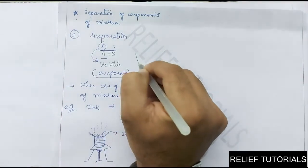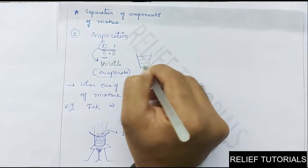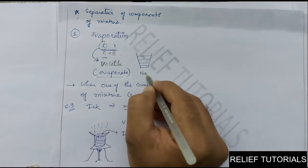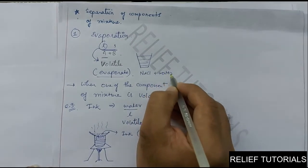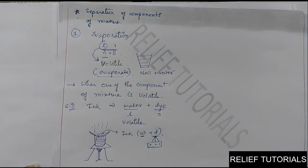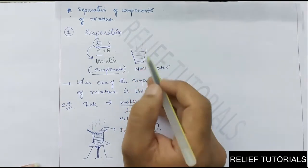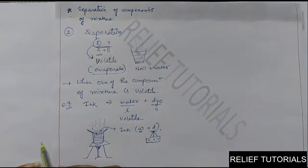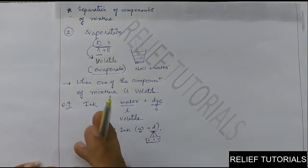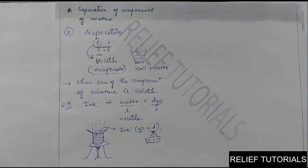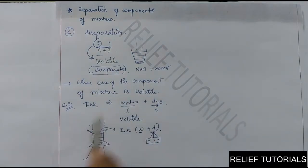Another famous example: consider a glass of water with common salt dissolved in it — a solution of NaCl plus water. If you keep this glass in the open atmosphere, due to sunlight water gradually evaporates, and only salt is left in the glass. Water plus sugar, water plus salt, water plus dye — if one of the substances in the mixture is volatile, we can use the separation method called evaporation.